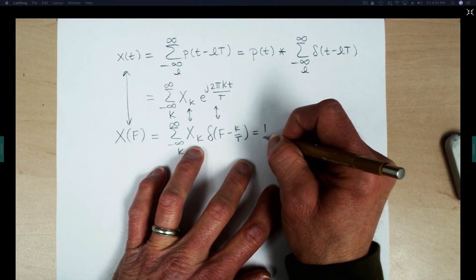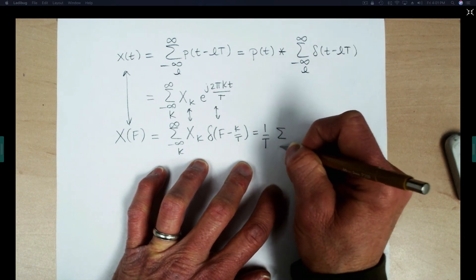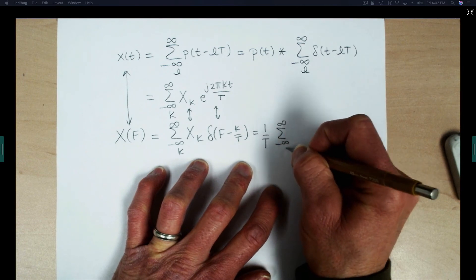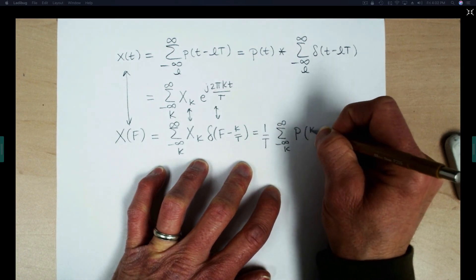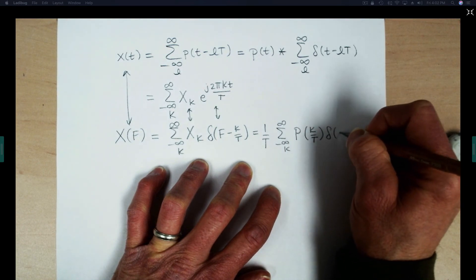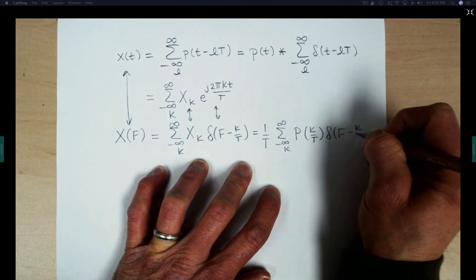And that gives us 1 over T, a sum of P of K over T delta F minus K over T.